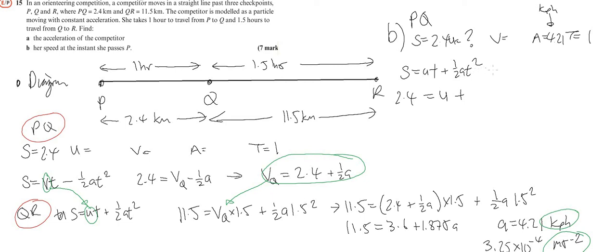So 2.4 equals u plus a half a, and we know what a is so that's going to be 2.105. So u equals 0.293 kilometers per hour. Now we have to turn that into meters per second, and that gives me 0.0815 meters per second for the speed.